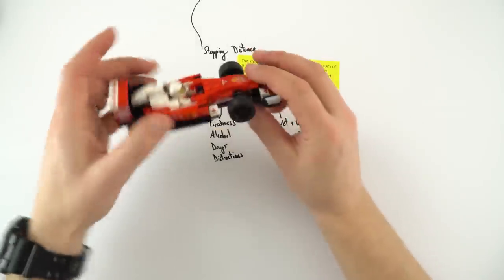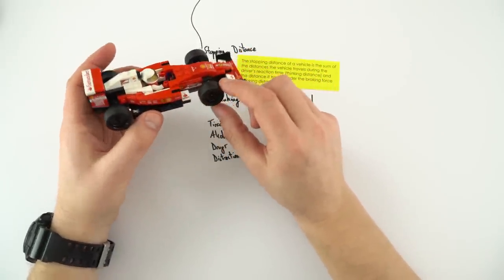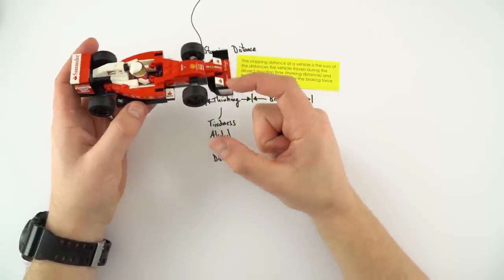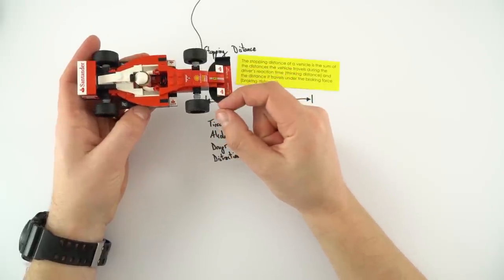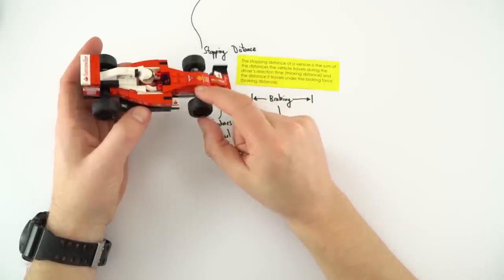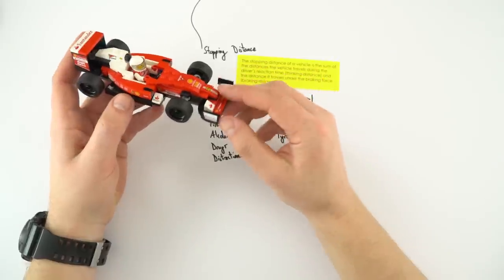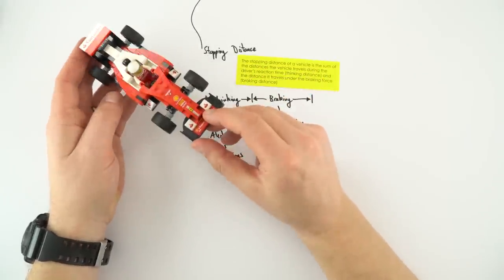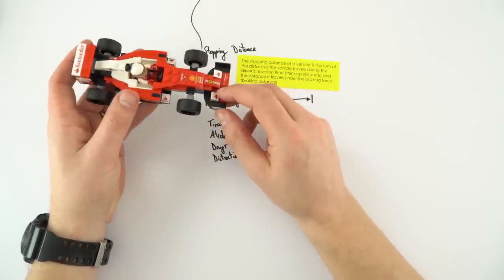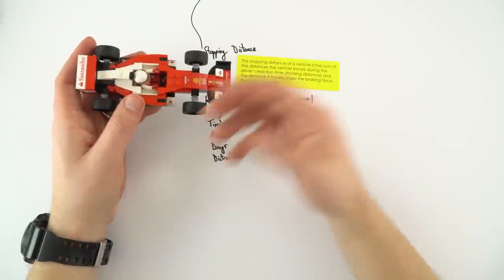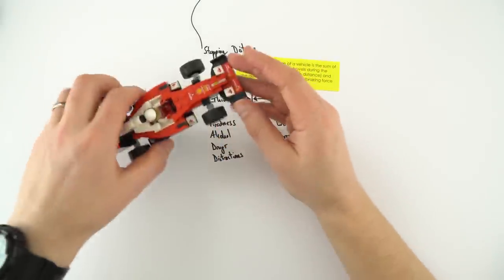Thinking back to the energy topic: a vehicle slows down because brake pads press against the brake inside the wheel, transferring kinetic energy from the car into thermal energy in the brakes and the surrounding environment, which heat up.